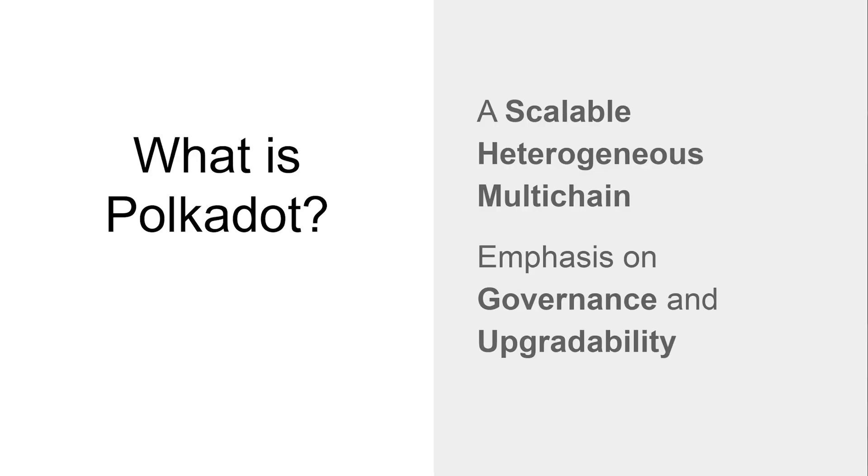Polkadot is a scalable heterogeneous multichain. It's scalable because we parallelize a lot of the execution, a lot of the transaction processing within Polkadot, in a way that doesn't really have an upper limit in terms of its eventual degree of parallelism. It's a multichain and it's heterogeneous because each of these pockets of transaction processing logic don't specify the fundamental kinds of transactions — they leave it entirely open-ended to the underlying team or developer or project. This gives an unprecedented level of flexibility.